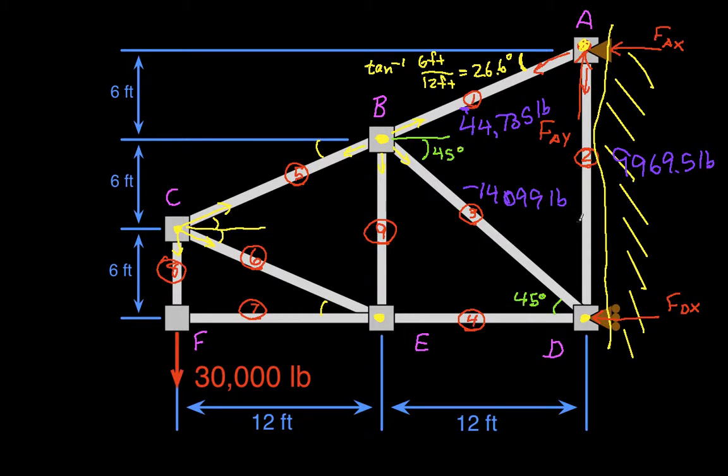T4 is minus 30,030.5 pounds. T5 is 33,585.4 pounds. T5 is minus 33,585.4 pounds.